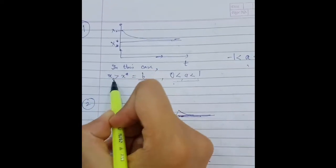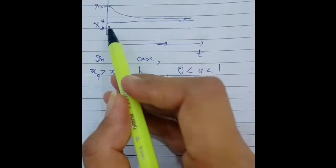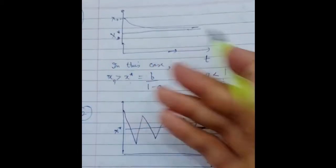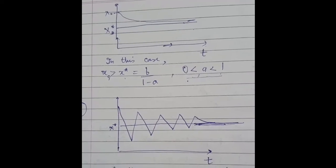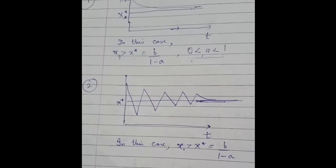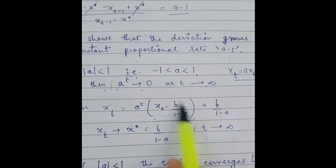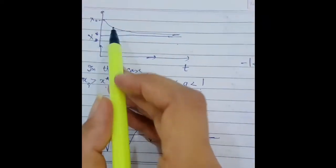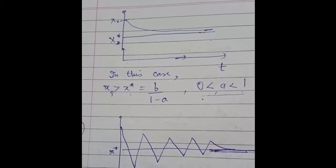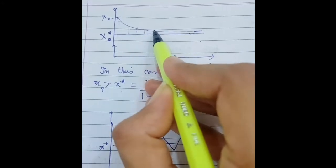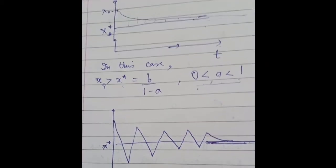Suppose x0 is greater than the equilibrium value. On the y-axis we have the variable value, on the x-axis we have the time variable. The equilibrium value is marked, and x0 is the starting point. As t increases, the first term of the solution will tend to become 0, and the difference between x and its equilibrium value will diminish, ultimately converging to the equilibrium value b upon 1 minus a.